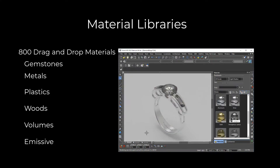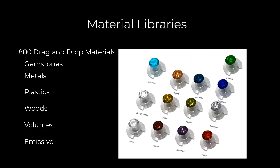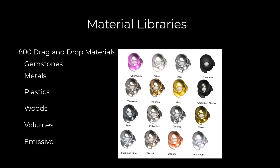Choose from 26 categories of plastic, glass, wood, brick, car paint, and leather. We also support advanced emissive and volume based materials for modeling fog or smoke. And be sure to check out our gemstone and metal based libraries.